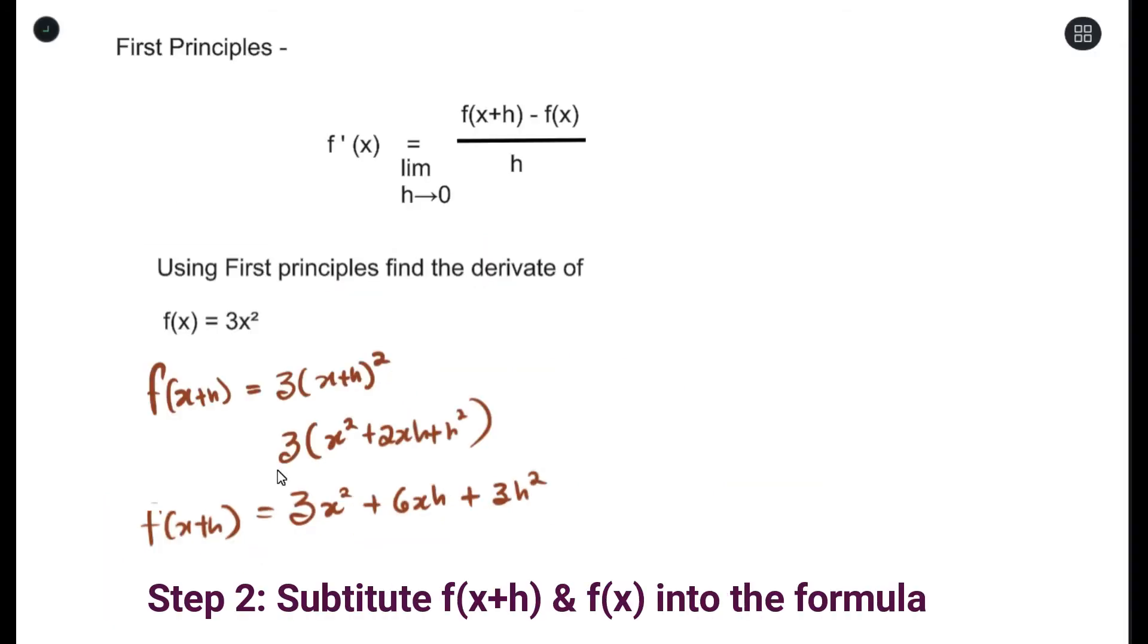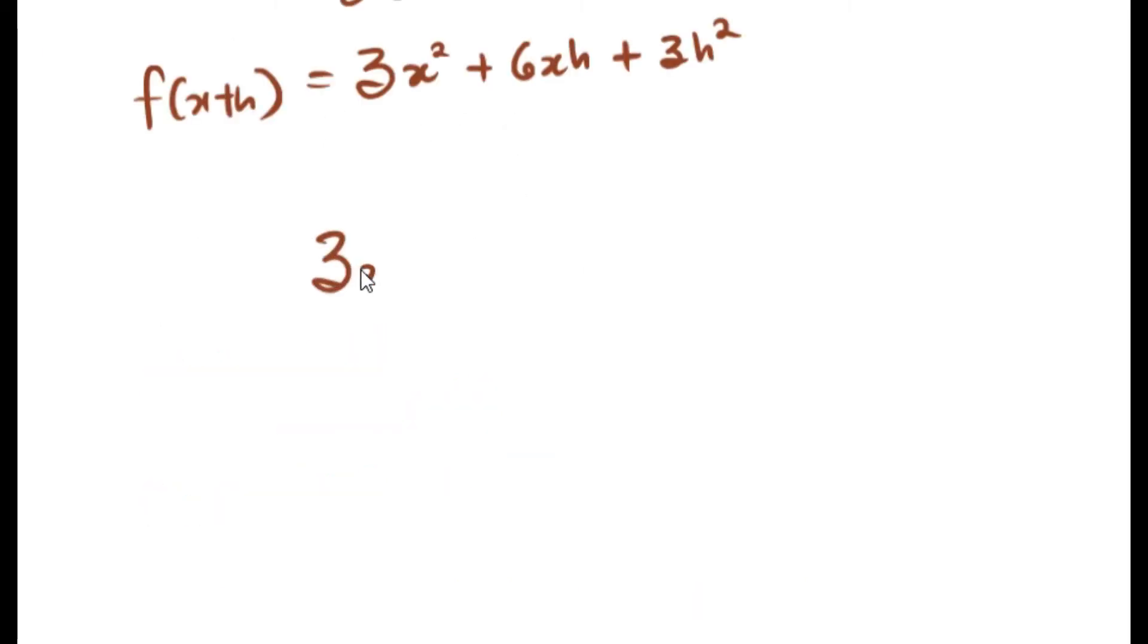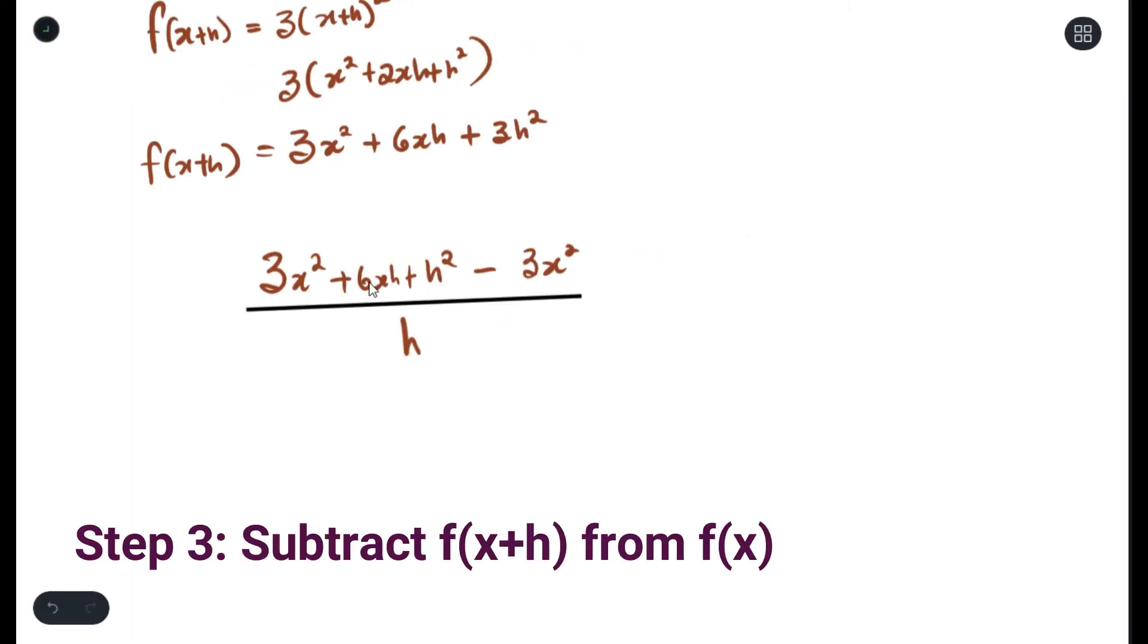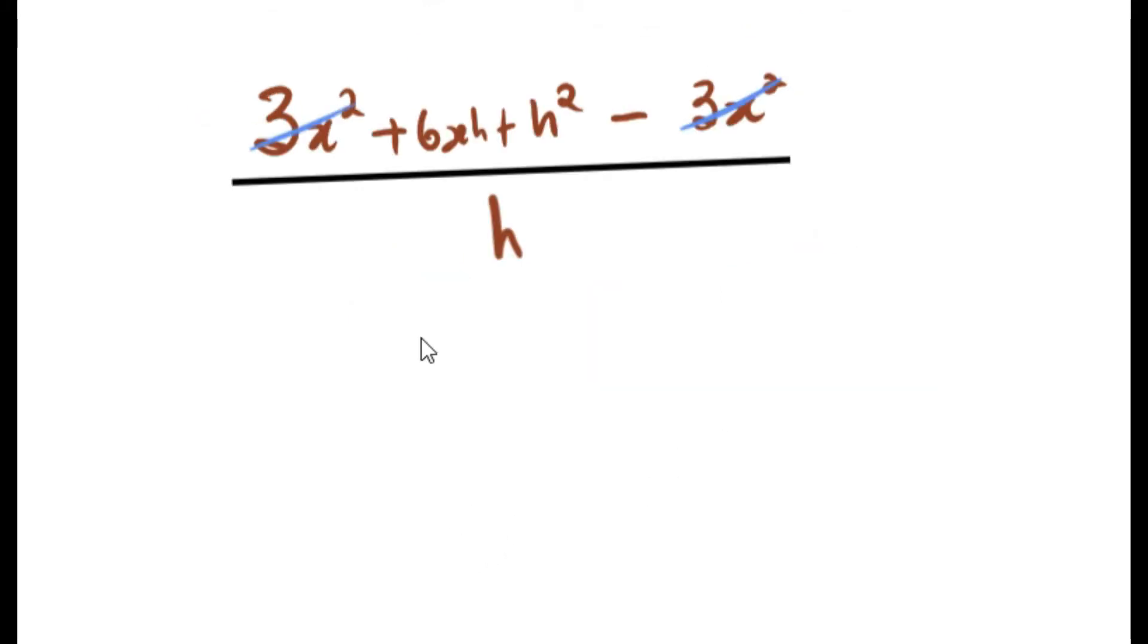The next step is to substitute this into the formula. Now we would subtract our f of x plus h from our f of x. That will go next. So as you can see here, this is 3x squared. This is negative 3x squared and that is positive 3x squared. So we can see those two cancel out.